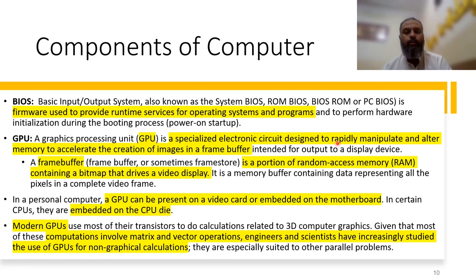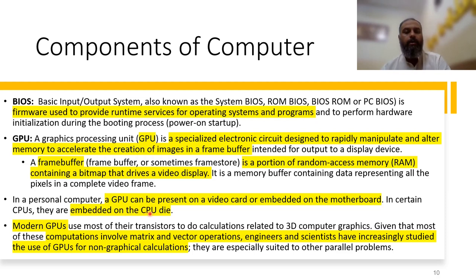The GPU — graphics processing unit — is a specialized electronic circuit designed to rapidly manipulate and alter memory to accelerate the creation of images in a frame buffer. A frame buffer is a portion of RAM containing a bitmap that drives a video display. GPU accelerates the creation of images in this frame buffer. A GPU can be present on a video card, embedded on the motherboard, or embedded on the CPU die.